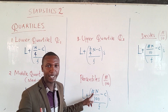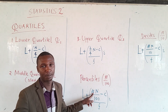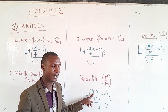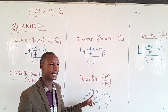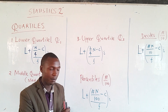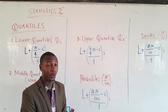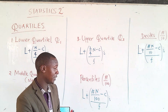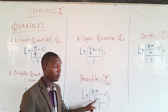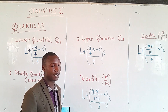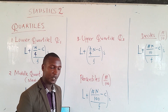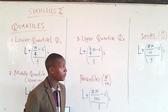Whenever we want to calculate, say, the 20th percentile, the number in the formula represents that percentile value — it could be 20, 30, 40, 5, or any number. For instance, the 20th percentile is calculated as 20 over 100 multiplied by n, where n is the total frequency.